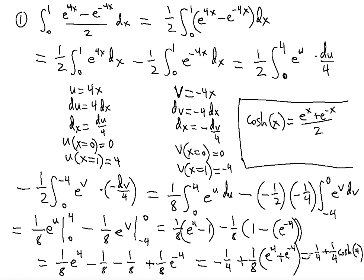Because 1 fourth ensures the 1 half is accounted for inside the parentheses — dividing e to the 4 plus e to the negative 4 by 2 gives cosh of 4. So the final answer for this definite integral is negative 1 fourth plus 1 fourth cosh of 4. I hope you found this video useful — please subscribe to my channel and I'll see you in the next video.